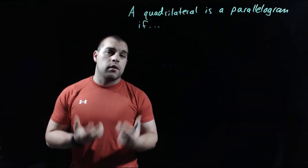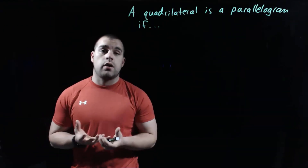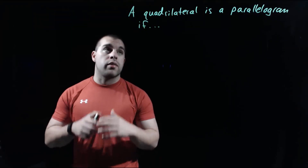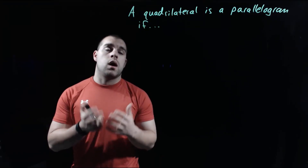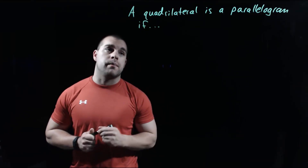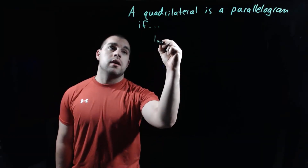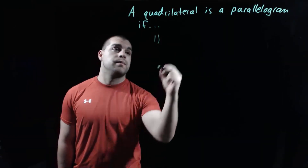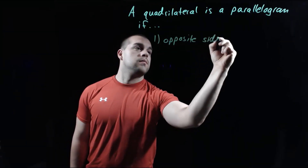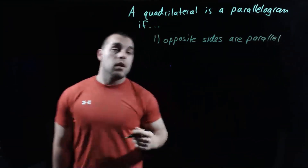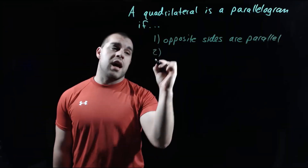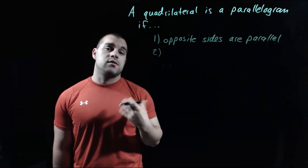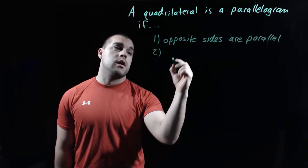A parallelogram is a special kind of quadrilateral, and there are five properties that we're going to talk about that make a quadrilateral be a parallelogram. Property number one is that opposite sides have to be parallel. For number two, along with those opposite sides being parallel, the opposite sides also have to be congruent to each other.